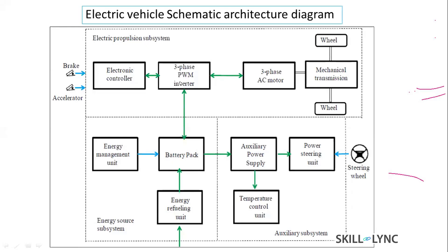From the battery, DC current is drawn and fed to the three-phase PWM (pulse width modulation) inverter. The inverter does the conversion of DC current to AC current, and that AC current is supplied to the motor as input. This is the power flow from the battery pack to the motor.